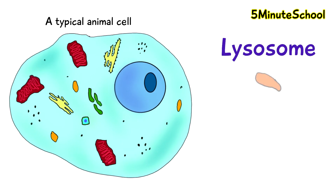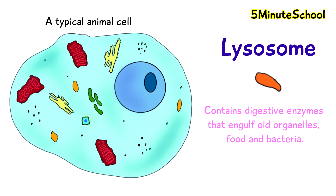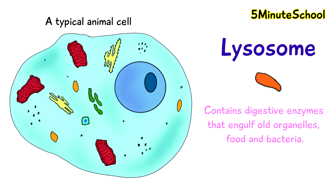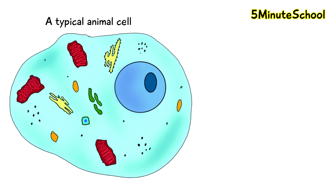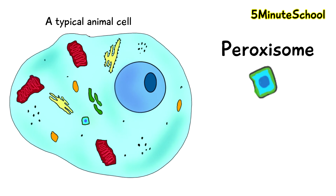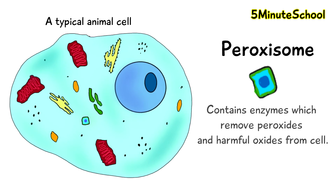This structure here is called a lysosome. It contains various digestive enzymes to engulf old organelles, food, and bacteria. This final structure we're going to talk about is called a peroxisome, and it contains enzymes that get rid of peroxides from the cell.